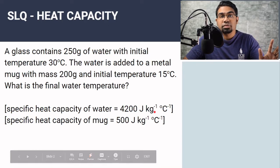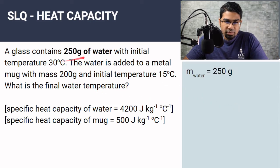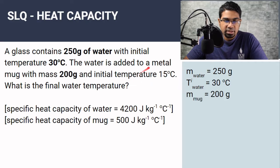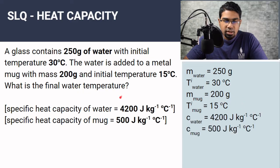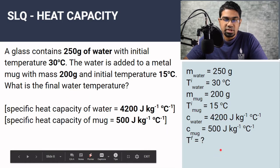As with all questions, the first thing we want to do is list out all the information given to us. Mass of water is 250 grams. Initial temperature of water, TI water, is 30 degrees Celsius. Mass of mug is 200 grams. Initial temperature of mug is 15 degrees Celsius. The specific heat capacities are given, and the question asks for the final temperature Tf.